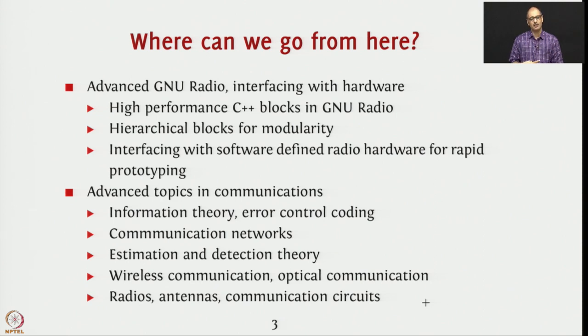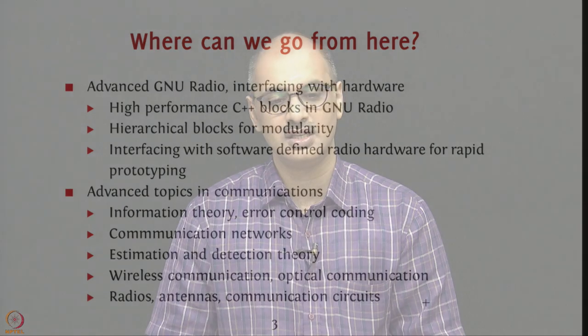Wireless and optical communication are further courses that directly build on this material. In optical communication the channel is very different, but the concept of transmitting bits effectively remains the same, and the modulation and demodulation aspects connected to optical channels are very relevant today when you need really high data rates. Finally, other building blocks of physical layers include radios, antennas, and circuits for communication — how to build radios that sustain high power requirements, antennas for directivity or omnidirectional coverage, and communication circuits for data conversion and transmission across transmission lines, especially important at very high frequencies.